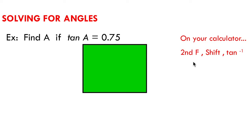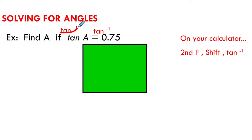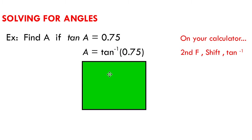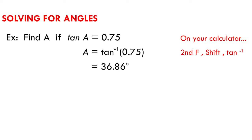You can find the tan inverse on your calculator by using the second function or shift key, then locating the tan to the power of negative 1 key. There's actually an inverse key for all three primary trig ratios: sine, cosine, and tangent. If I take the tan inverse of both sides of this equation, the tan inverse and the tan cancel each other out, leaving just angle A equal to the tan inverse of the right side. Taking the tan inverse of 0.75 on your calculator gives 36.86 degrees.